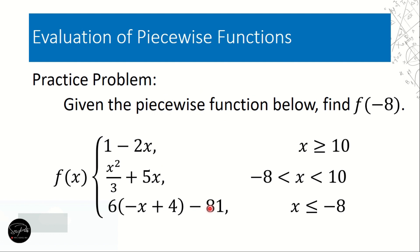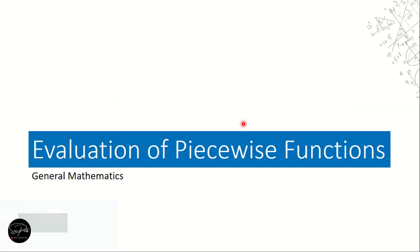For our practice problem, given the piecewise function below, find f of negative 8. First, identify whether negative 8 is greater than or equal to 10, between negative 8 and 10, or less than or equal to negative 8. Once you identify which condition negative 8 satisfies, use the corresponding function to evaluate it. Comment your answer in the comment box. That will be all for this video lesson — see you in the next video!